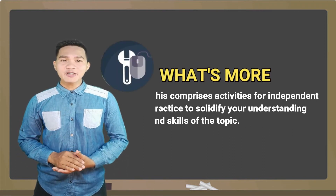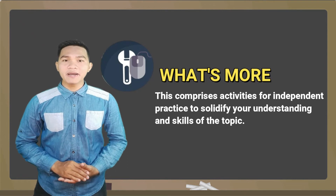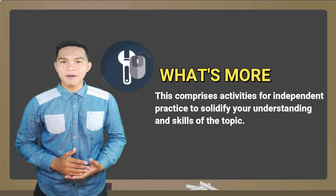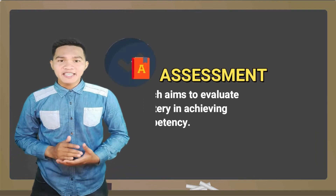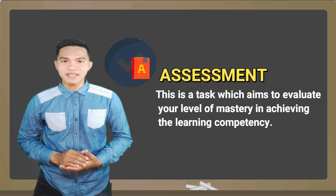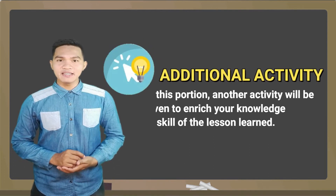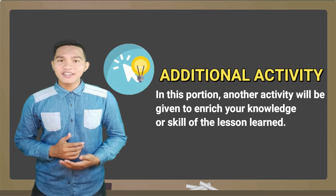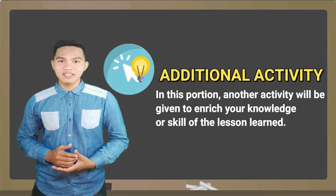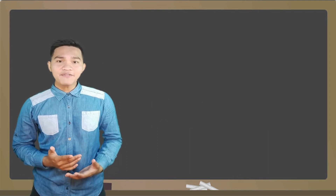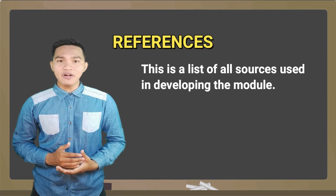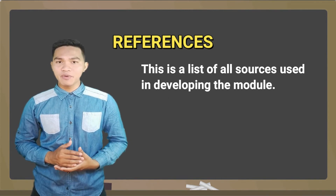What's More: This comprises activities for independent practice to solidify your understanding and skills of the topic. Assessment: This is a task which aims to evaluate your level of mastery in achieving the learning competency. Additional Activity: In this portion, another activity will be given to enrich your knowledge or skill about the lesson. At the end of this module, you will also find References — a list of all sources used in developing the module.